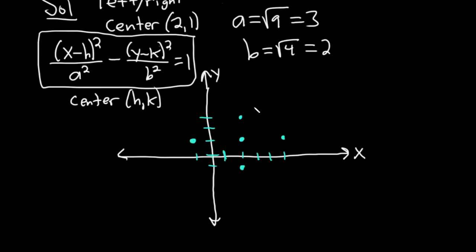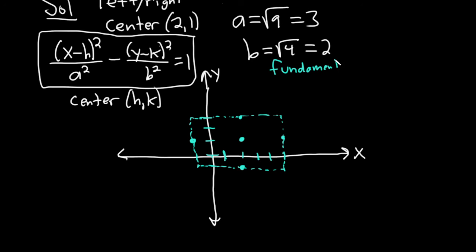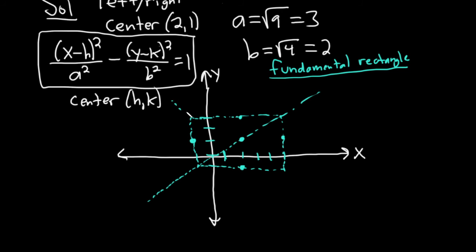Because it opens left and right, we go left and right by a. If it opens up and down, you go up and down by a. Then you draw a rectangle — this is called the Fundamental Rectangle. Then you draw these lines through the corners. This is a rough sketch, not perfect. These are the asymptotes — slant asymptotes or oblique asymptotes.